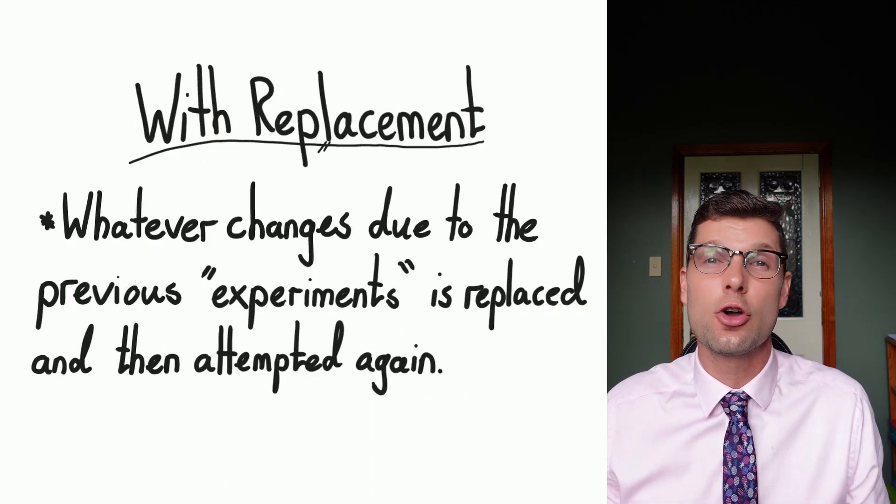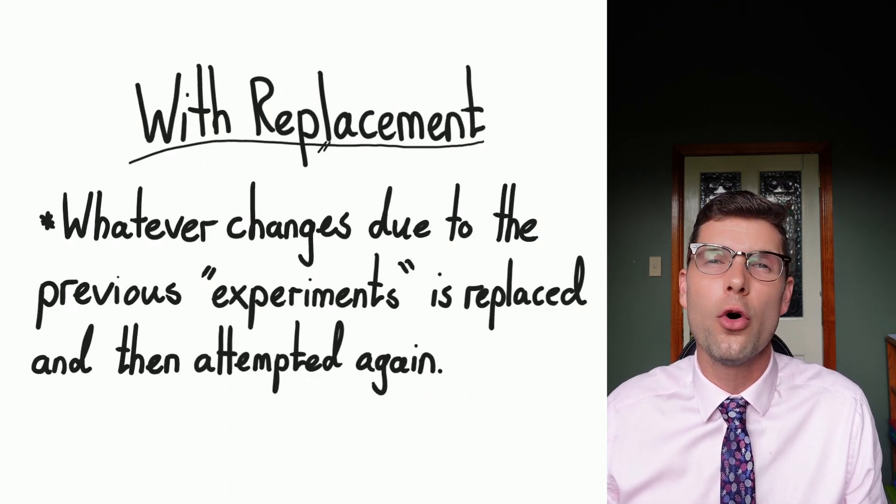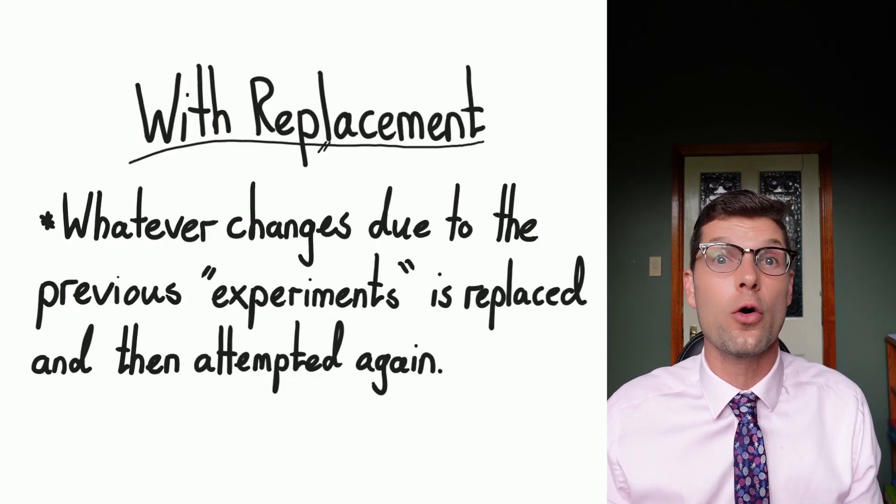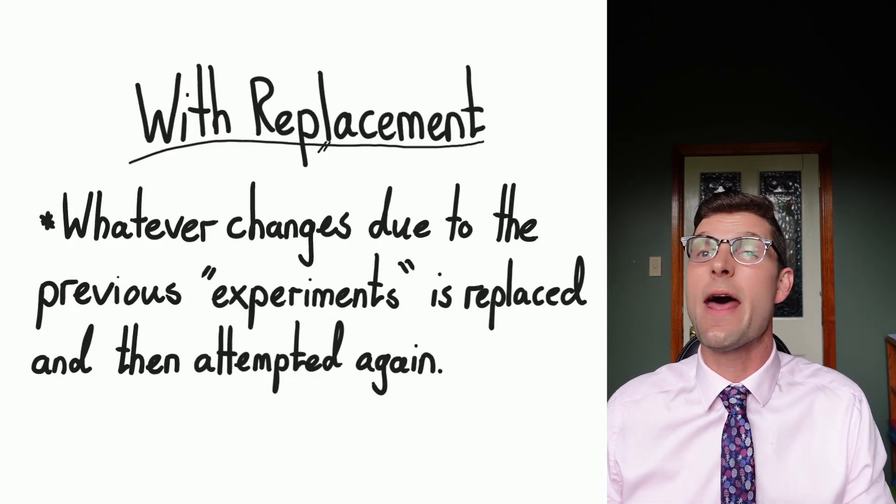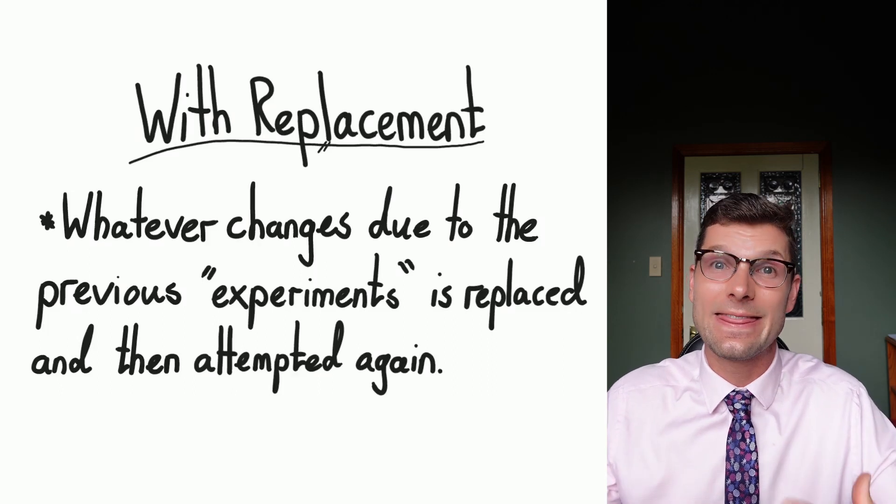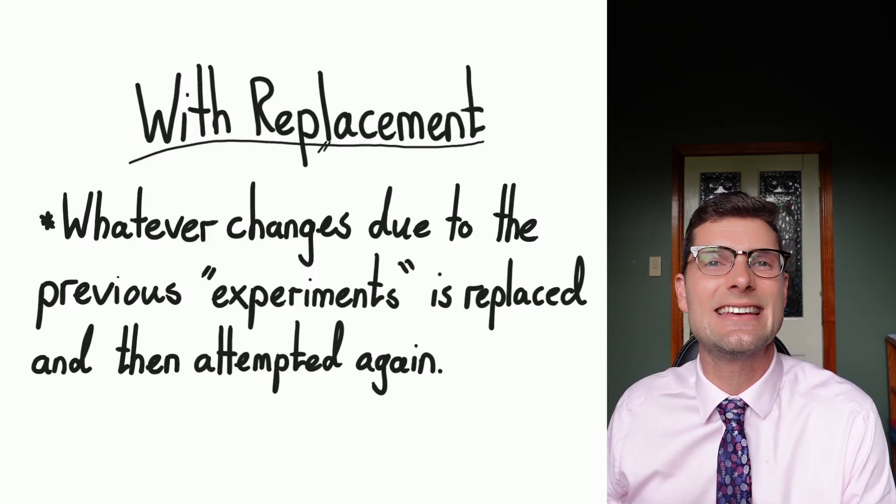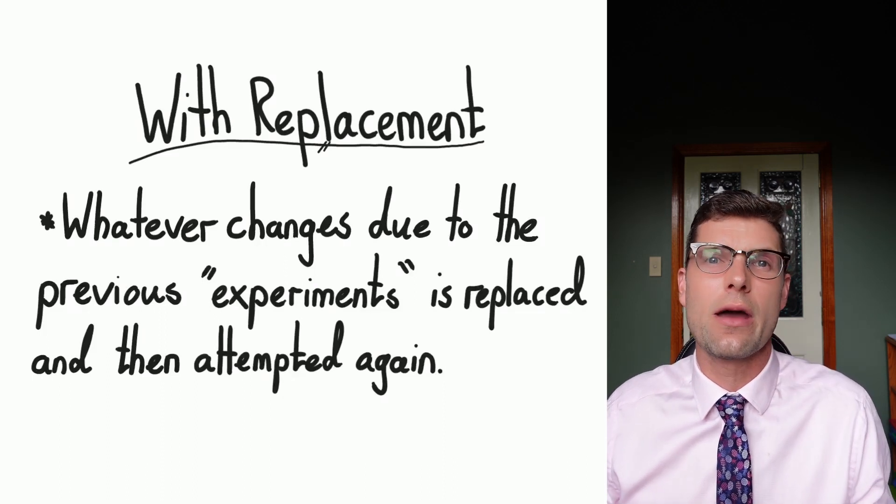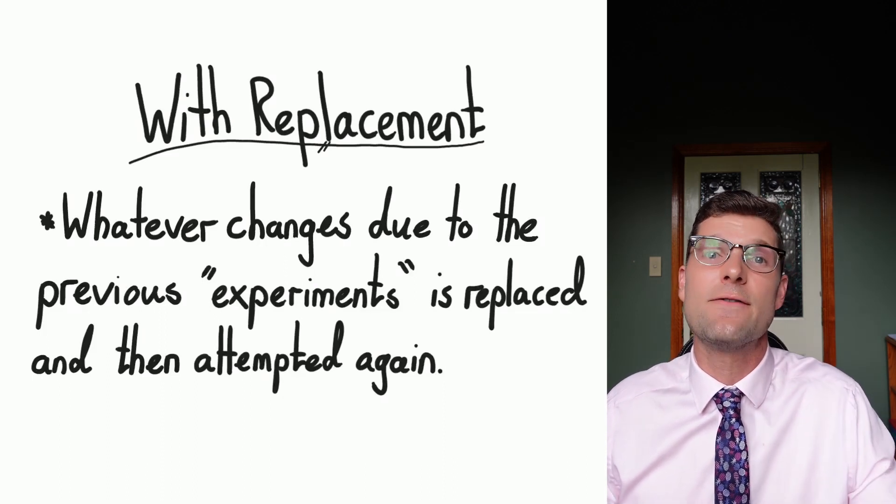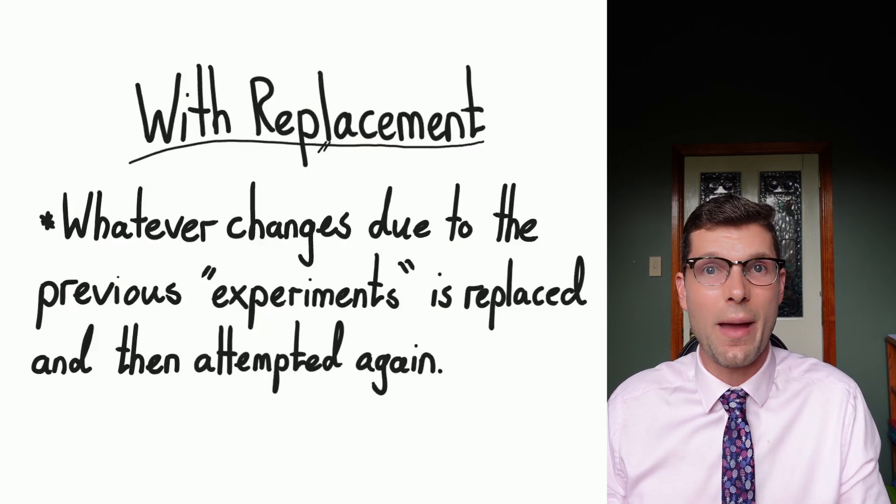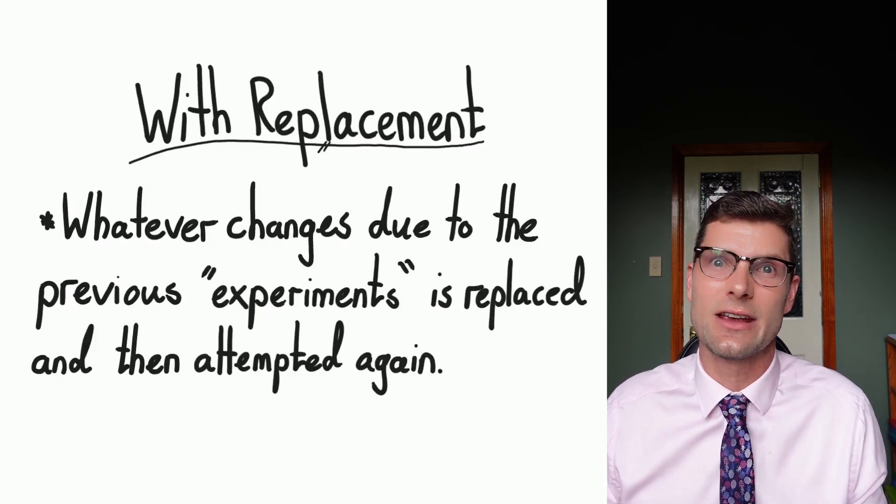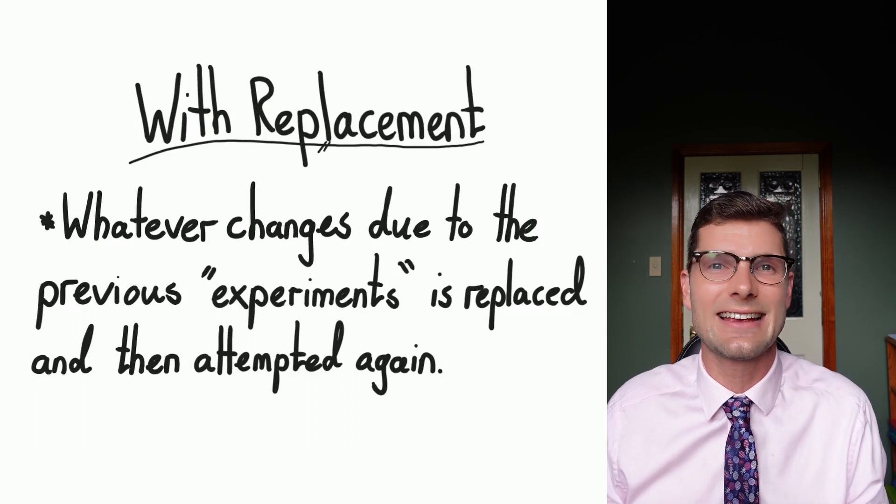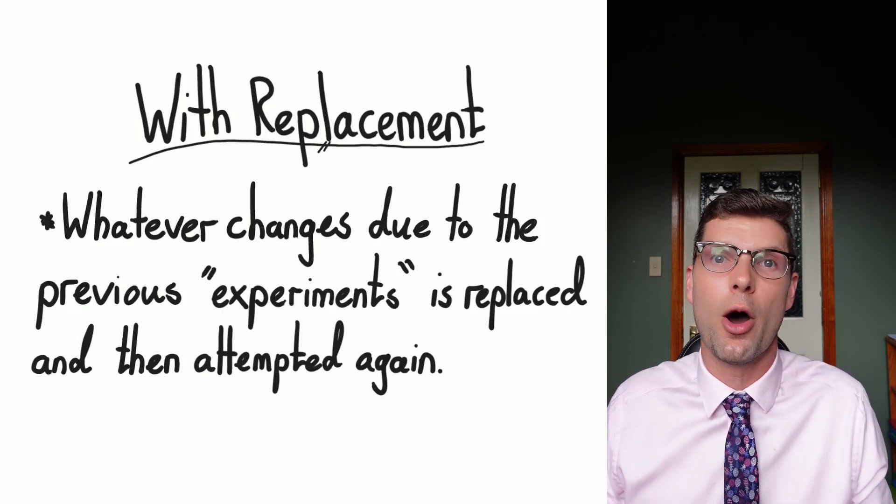The first thing we're going to look at is with replacement. All this means is that anything that happened the first experiment round, no matter what happened, is then replaced so it's exactly the same for the second go. An example: if you gave someone a card and they put it back in, they could get the same card because you've reset the deck. You still have the exact same 52 cards for both goes.